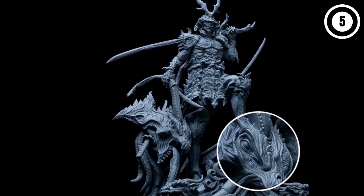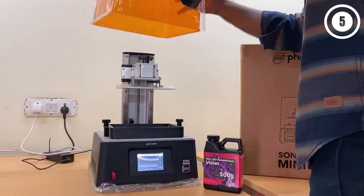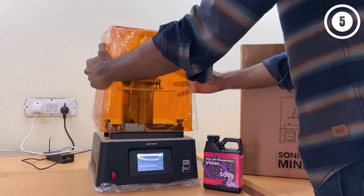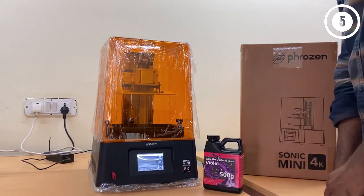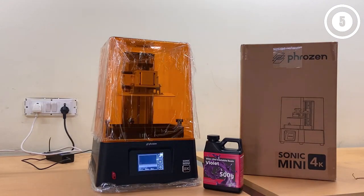Want to rerun a test file at a different exposure? No problem, the Sonic Mighty 8K will let you change exposure settings and more right inside the printer. I found this extremely helpful while dialing in a new resin.